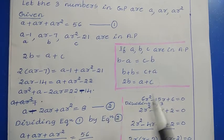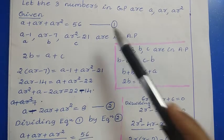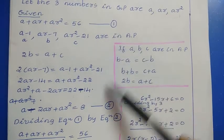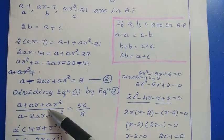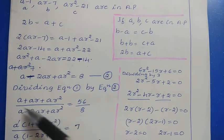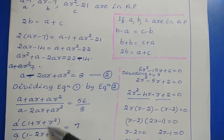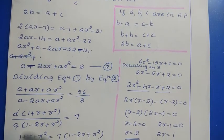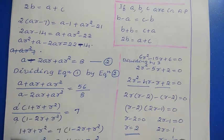Now divide equation 1 by equation 2: (A plus AR plus AR squared) divided by (A minus 2AR plus AR squared) equals 56 divided by 8, which is 7. Taking A as common factor from both numerator and denominator, A cancels out, leaving (1 plus R plus R squared) divided by (1 minus 2R plus R squared) equals 7.